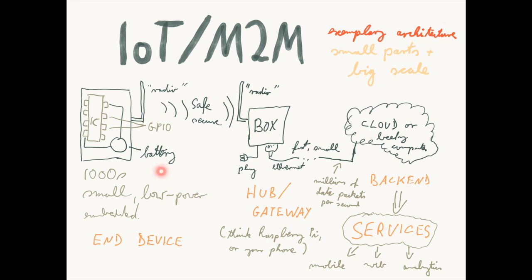On one side we have the end devices — small, low-power embedded devices typically built into a sensor or an actuator, down to a smart appliance like a washing machine that will be Internet-connected. There is then a connection to what we call a hub device, essentially a radio receiver that is powered, has a faster Internet connection, and can forward information from hundreds or thousands of these devices to relay that information to the cloud.